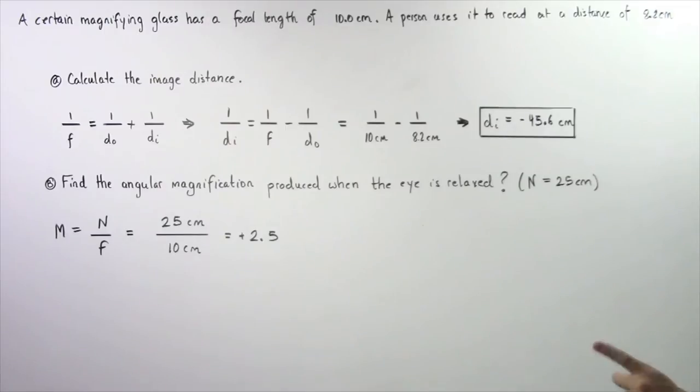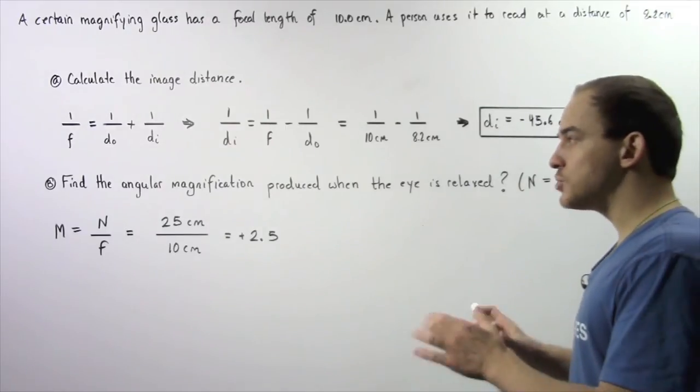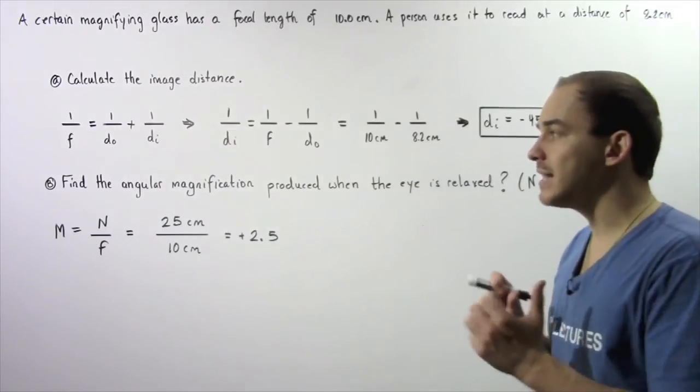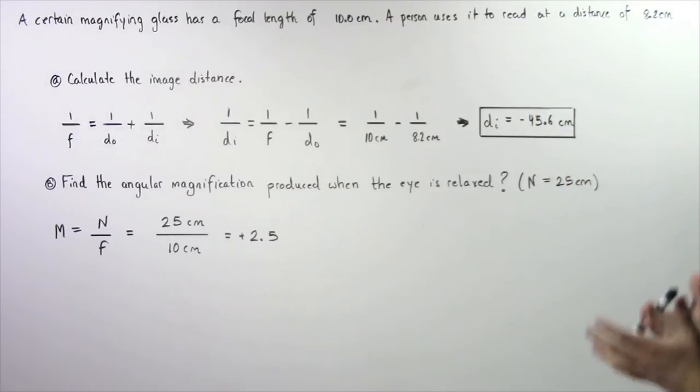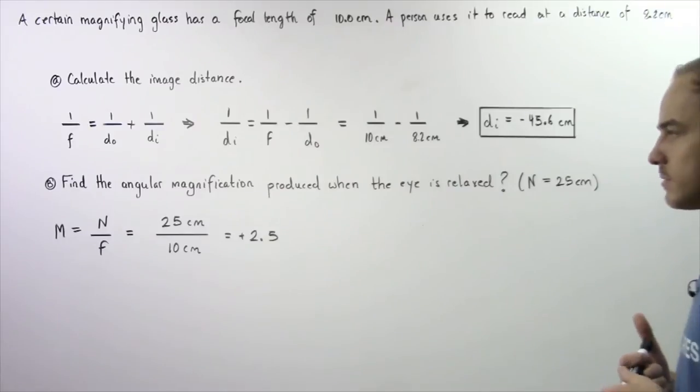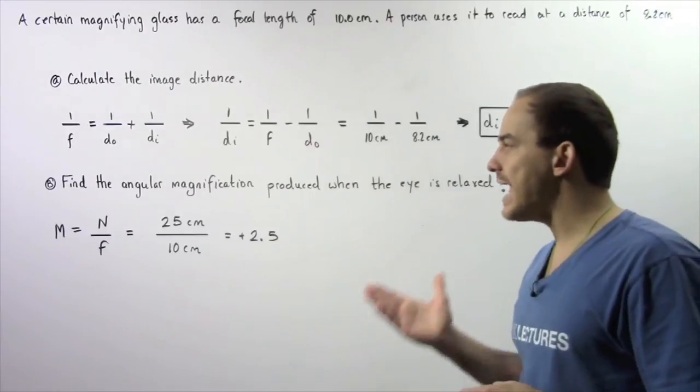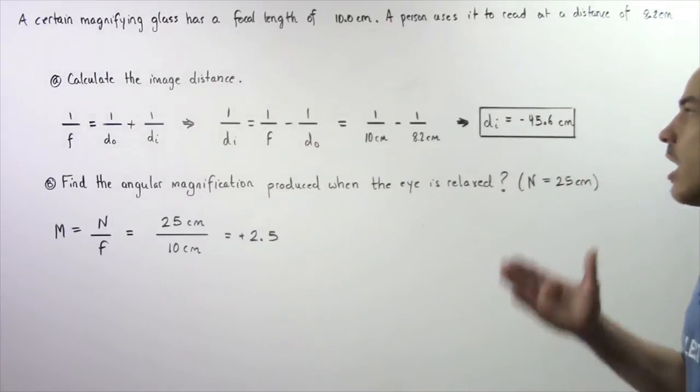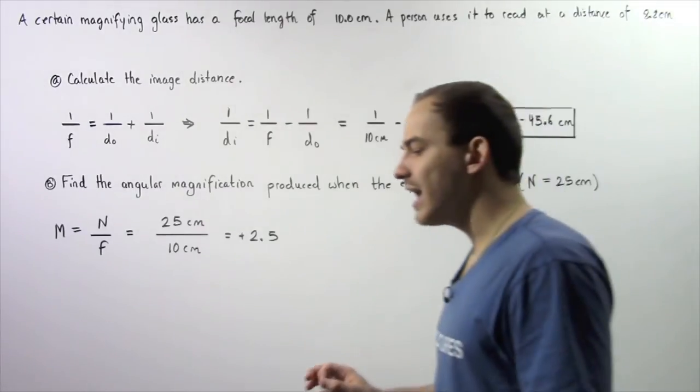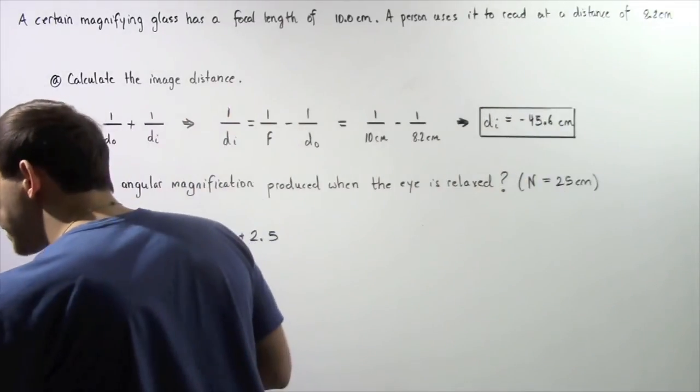The negative simply implies that our image is found on the same side as the object. That is, our image is a virtual image. Now let's move on to part B. Find the angular magnification of the magnifying glass produced when the eye is fully relaxed.